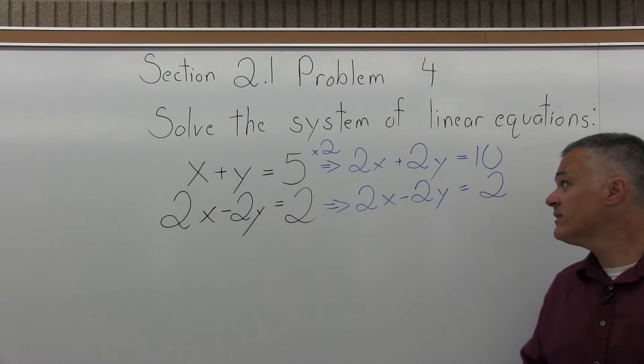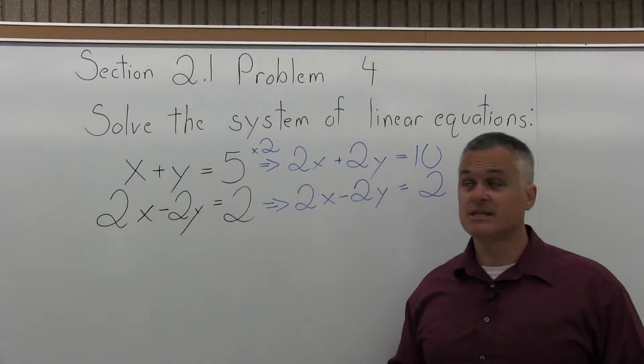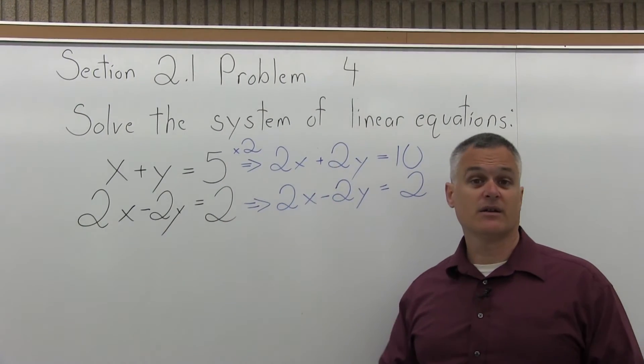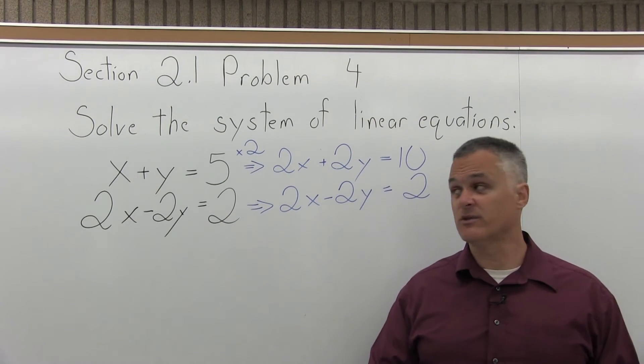So step one is complete. One of the variables has the same number in front, but with opposite signs. I have a 2y and a negative 2y. So step two is add the equations together and cancel one of the variables.